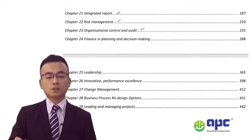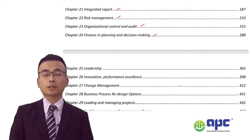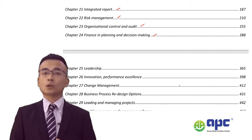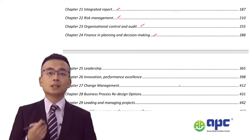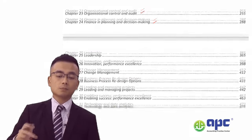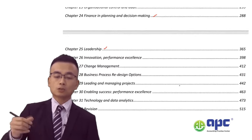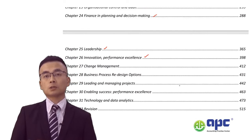From chapter 24 onwards, we'll look at finance in planning and decision making, recapping knowledge from ACCA studies including management accounting, PM performance management, and FM financial management. We'll also talk about leadership theories, the difference between leadership and management, and innovation and performance excellence — how to use appropriate models to ensure company success.